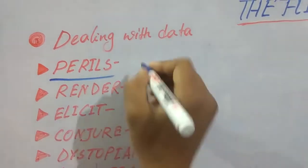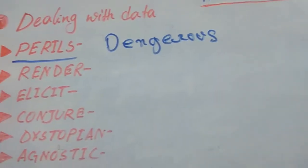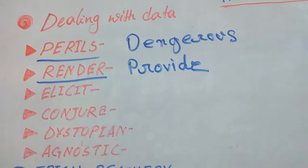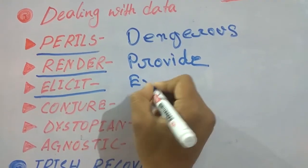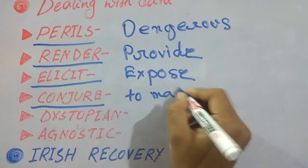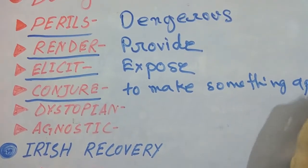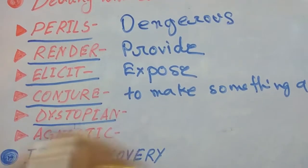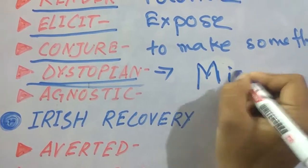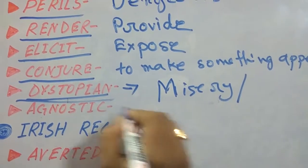Now the vocabularies from this article. First: 'perils' means dangerous. Second: 'render' means provide. Third: 'elicit' means to draw out or expose. Next: 'conjure' means to make something appear, usually in someone's mind. 'Dystopian' means misery or unhappiness. 'Agnostic' meaning doubtful.